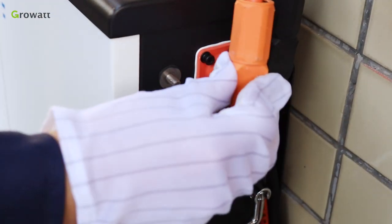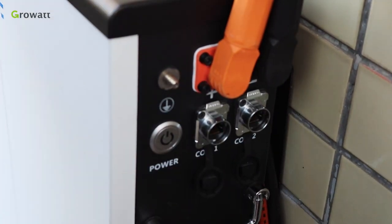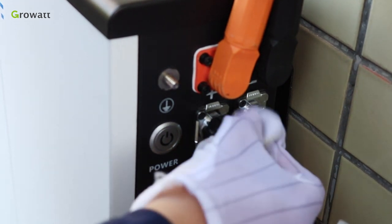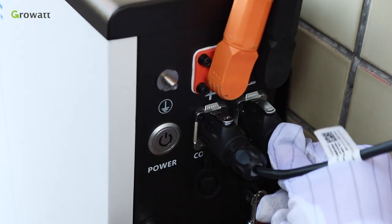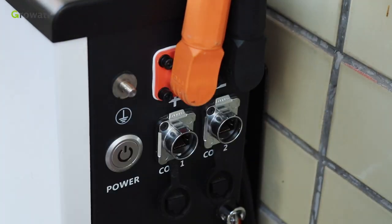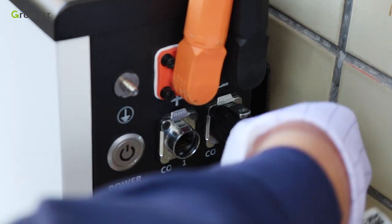For connection, firstly connect the positive and negative power cable from the inverter to the battery. Connect the communication cable from inverter to Comm.1 port. Secondly, connect the power and communication cable from the first battery to the second battery.